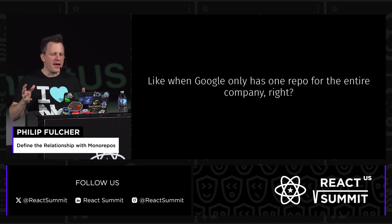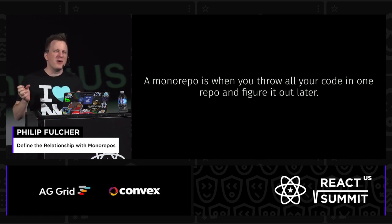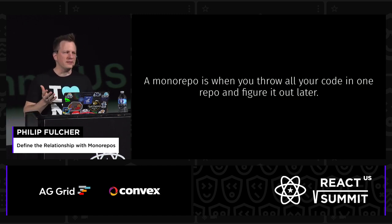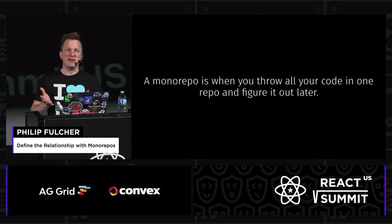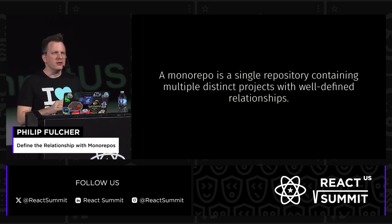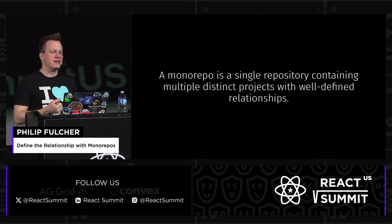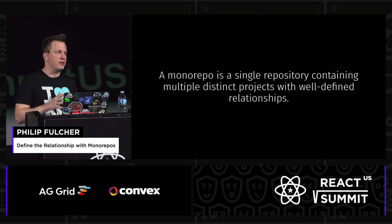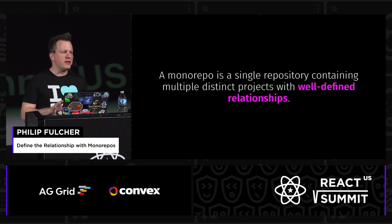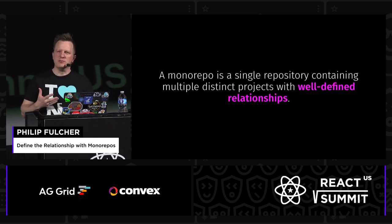That's not what we're talking about — Google having one repo for the entire company is a scale of monorepo that's unfeasible for most people. You're probably not Google. Maybe a monorepo is when you just throw all your code into one repo and figure it out later, but that's definitely not something we want to do. So let's have a workable definition: a monorepo is a single repository containing multiple distinct projects with well-defined relationships. What I really want to talk about today is this last element — what do we mean by well-defined relationships?